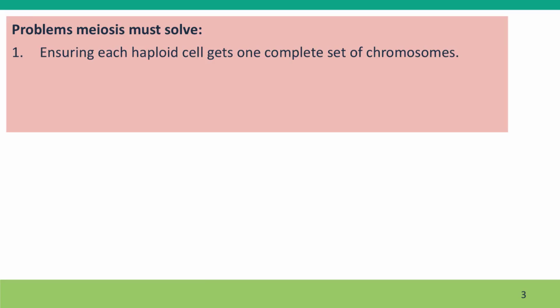We talked about in the previous lecture that meiosis solves the first problem, ensuring that each haploid cell gets a complete set of chromosomes by pairing the homologues so that they can be pulled apart when the cell divides in the same way that the sister chromatids are pulled apart in mitosis.